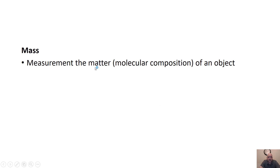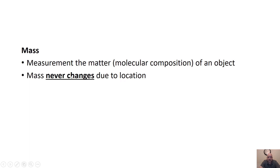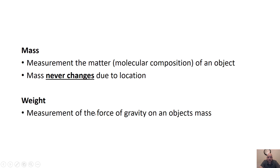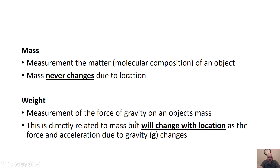Mass is a measurement of matter — what makes up the atoms and molecules that make up an object. Mass is never going to change because the molecules that make you up are not going to change. Weight, on the other hand, is going to change because the force of gravity acting on an object's mass will change. It's directly related to mass, but will change with location as the force of acceleration due to gravity changes.